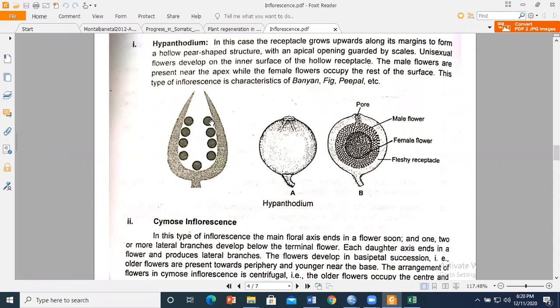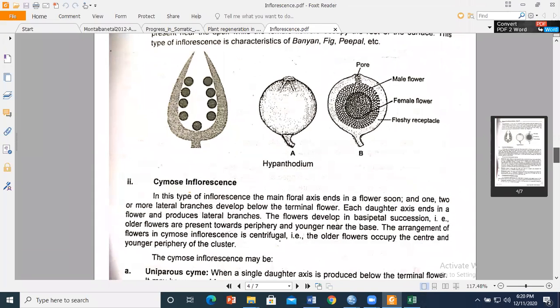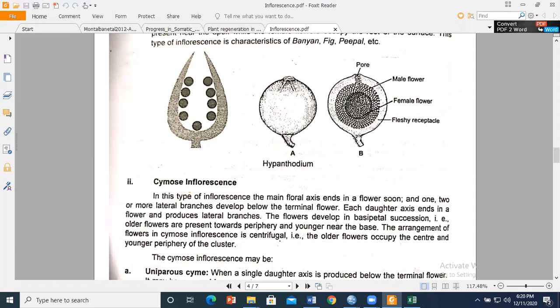Here are some examples of fig, peepul, banyan. If you look at it, it is a round structure. If you cut it, you can see the internal arrangement.